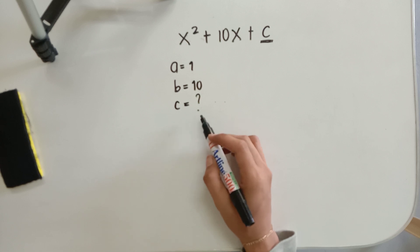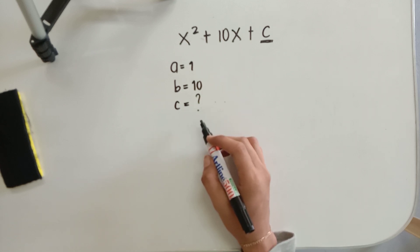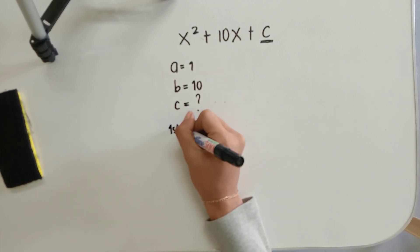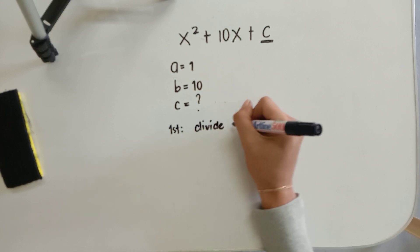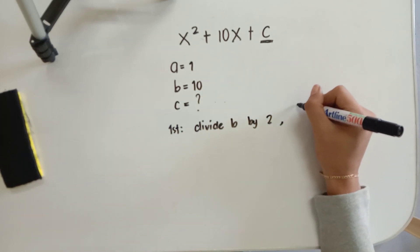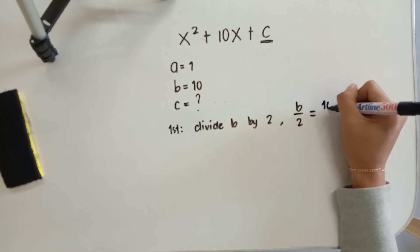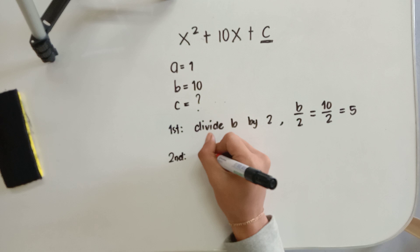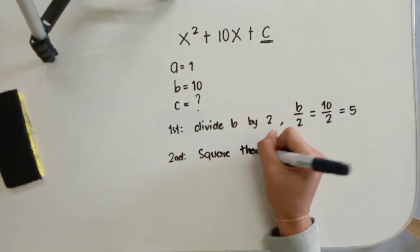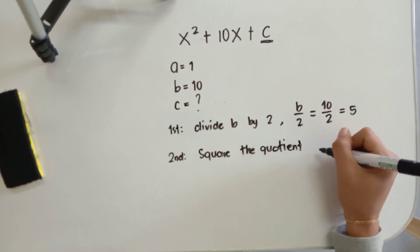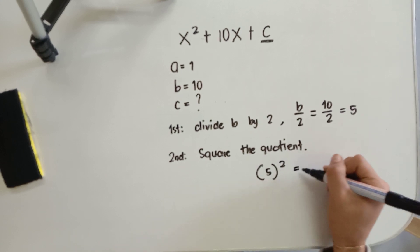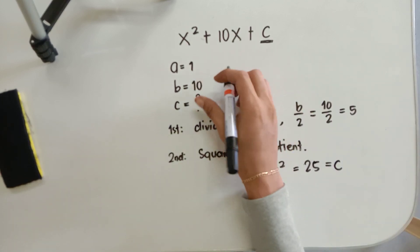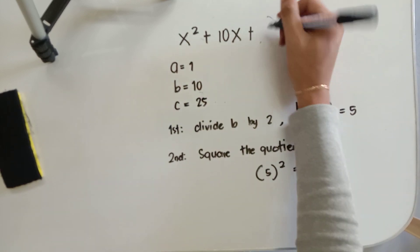We are now going to find the value of c. In finding for the value of c, we have to locate b, that is 10. The first thing is we have to divide b by 2 — that is b over 2. Substituting, that is 10 over 2, which is equal to 5. After finding the quotient, we will now square it. Since the quotient is 5, that becomes 5 squared, which is equal to 25. This is now the value of c, which is 25.